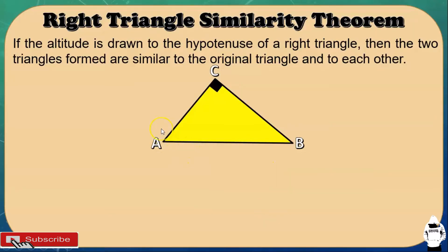What is RTST? If the altitude is drawn to the hypotenuse of a right triangle, then the triangles formed are similar to the original triangle and to each other. So if you draw an altitude of right triangle ACB, that altitude is CD. This altitude forms two right triangles: right triangle ADC and right triangle BDC. These two right triangles are similar to the original triangle ACB.